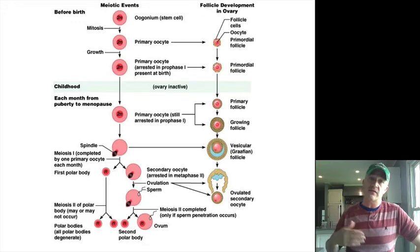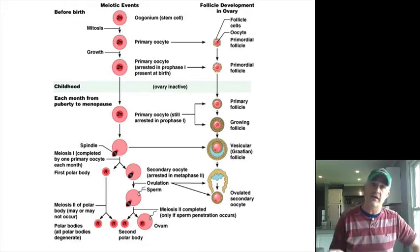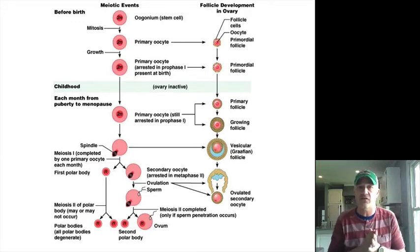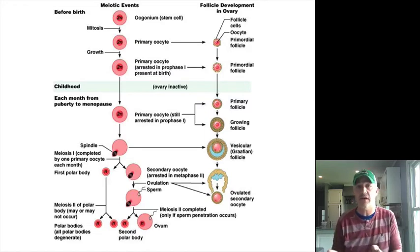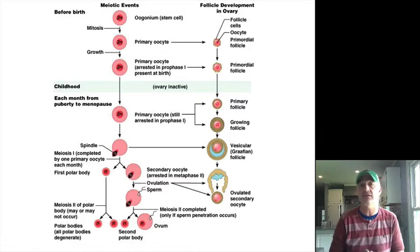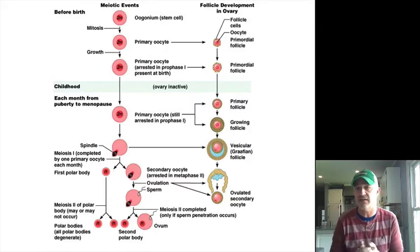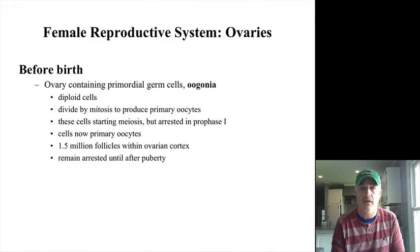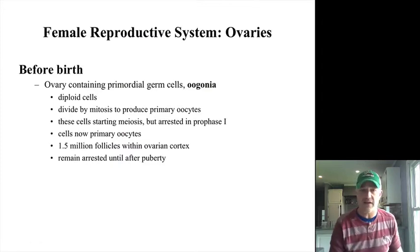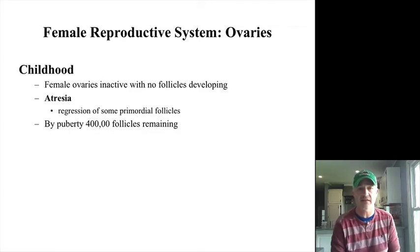This is also part of the reason they talk about pregnancies later in life — after 35 — being a higher risk pregnancy. Those oocytes and that genetic material have been present in the female for 35 years at that point, unlike male sex cells that are continually being developed and are not as likely to pick up mutations. Before birth you have all these diploid cells — about 1.5 million follicles — that are all in a kind of stasis until puberty hits.